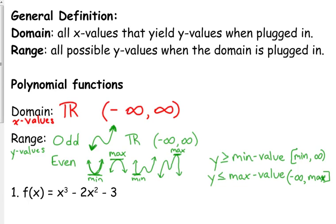Okay, so let's summarize this a little bit. Polynomial functions. Polynomials are x cubed, x squared, x to the fourth, x to the fifth. Any of those in combination of each other are polynomial functions.